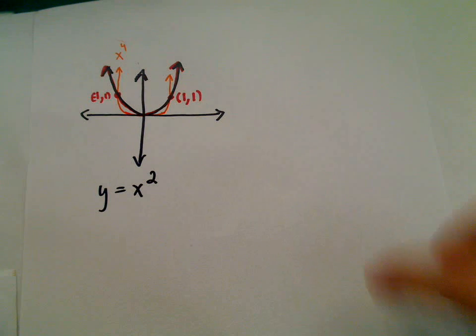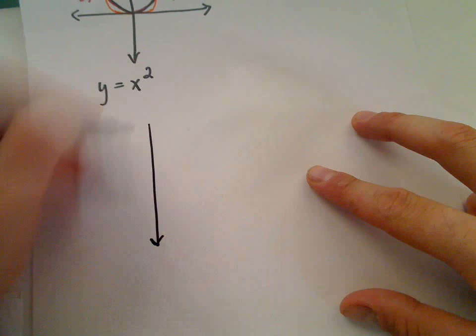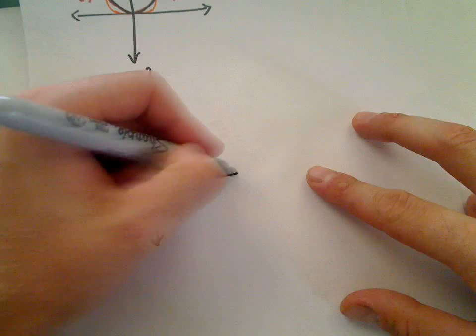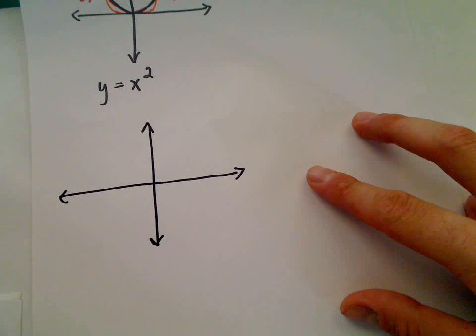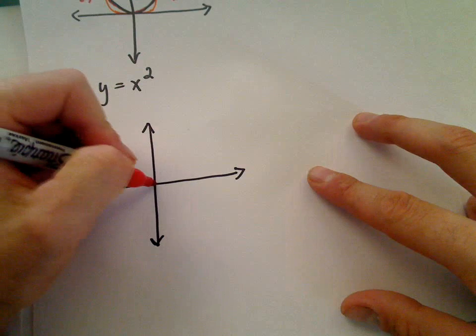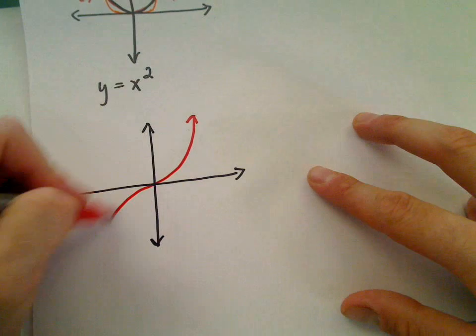Likewise, if you graph an odd power of x, x cubed, x to the third, x to the fifth, x to the seventh, they're all going to have the basic shape of a graph like this.